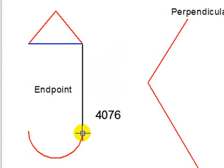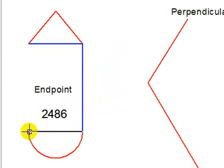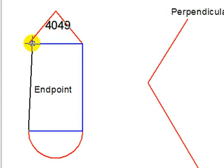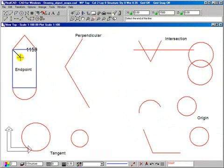I can come down here to the end of the arc, get the square, click. I come across here, get the square and click. I come back up here and get the square. Notice the rubber band is not looking very vertical, but I have pointed close enough to the end of the line for the software to see the line. When I click, the line is drawn perfectly.